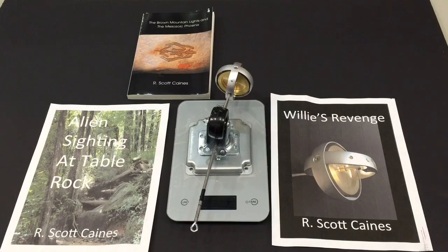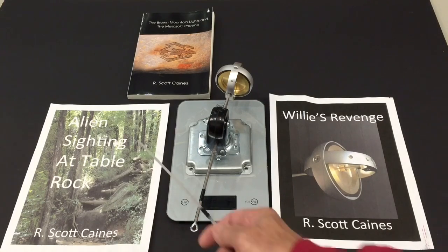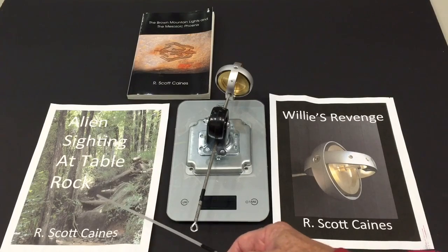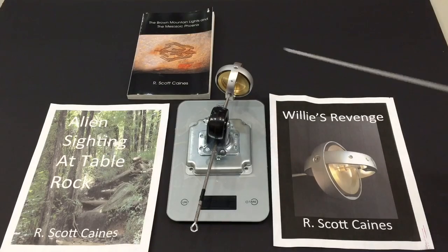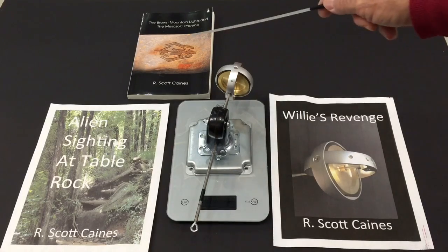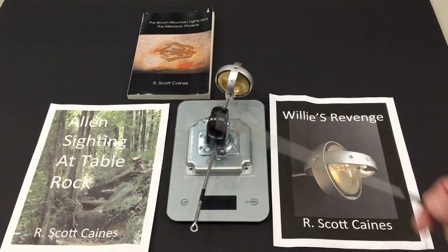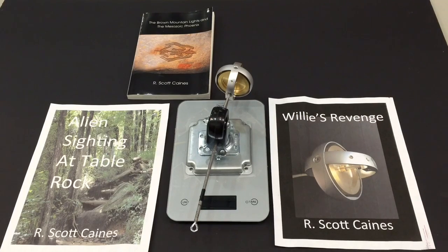If you enjoy this kind of science, you might enjoy some of the stories I've written. This one in particular, Willie's Revenge, is a short story available on Amazon's Kindle store. You don't even need a Kindle or a Kindle app. It's about three young geniuses who use gyroscopes to defeat some terrorists. This, Alien Sighting at Table Rock, is kind of interesting, another short story available on the Kindle. This right here is a novel I actually wrote back in 1989, Brown Mountain Lights in the Mesozoic Phoenix. It's available in both paperback and ebook format from iUniverse.com or Amazon.com. Concerning gyroscopes, this is the one you might want to read. Thank you.